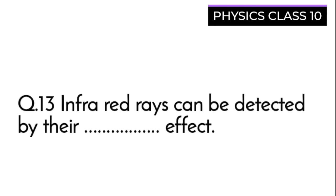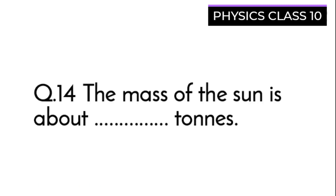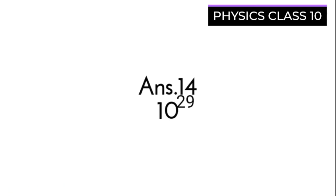Question 13: Infrared rays can be detected by their dash effect and its answer is heating effects. Now question 14: The mass of the Sun is about dash tons, not kilograms, it's tons and the answer is 10²⁹ tons.